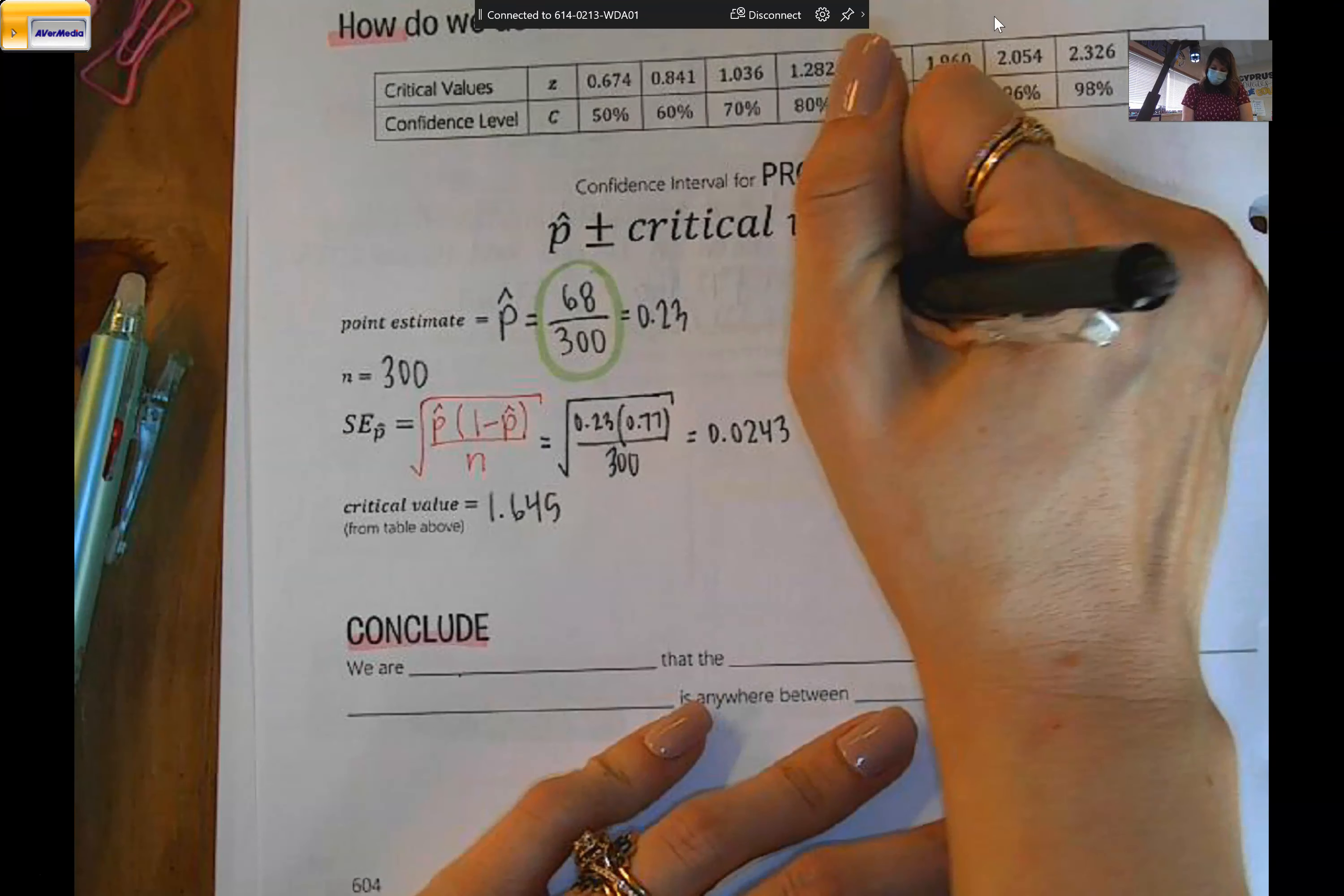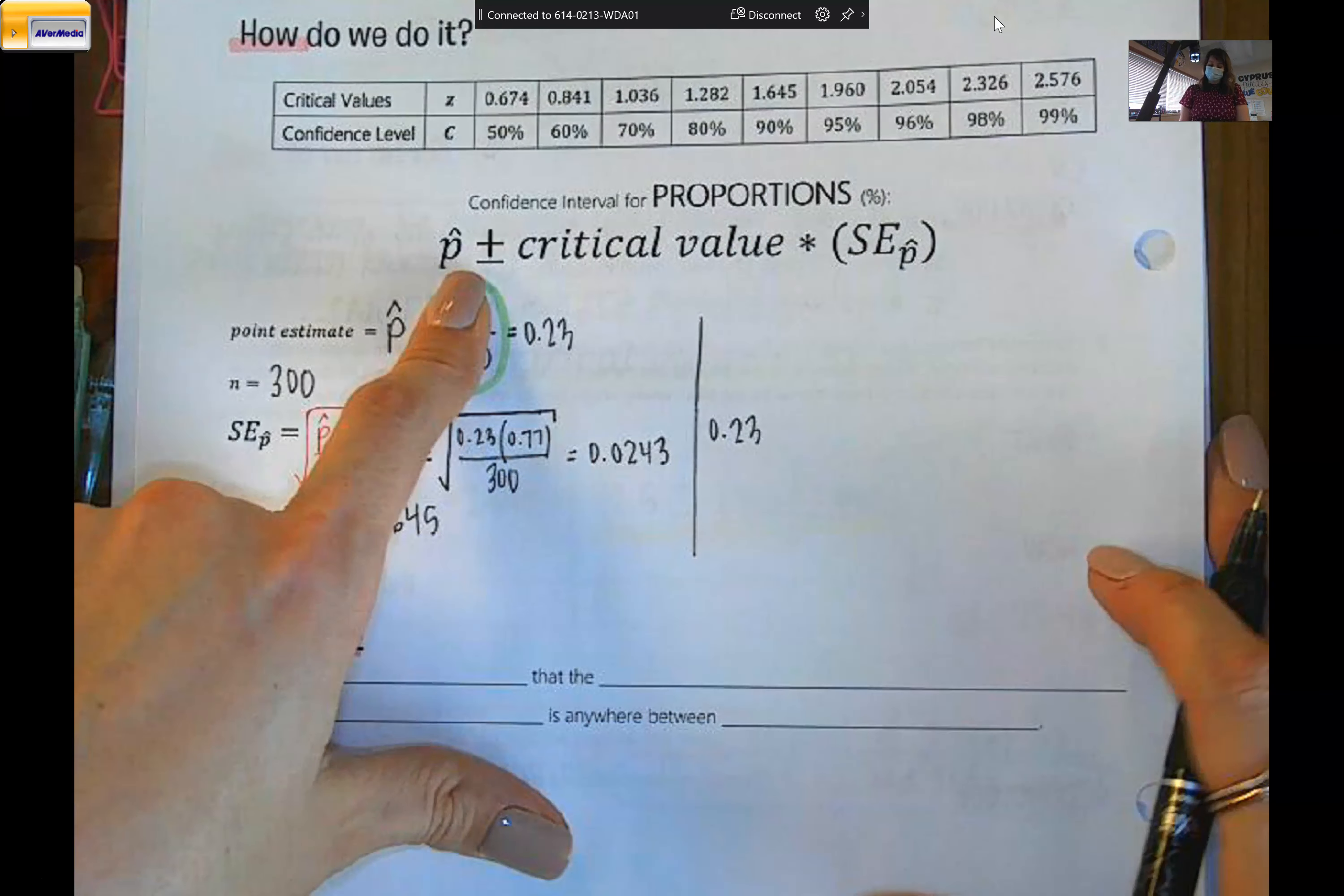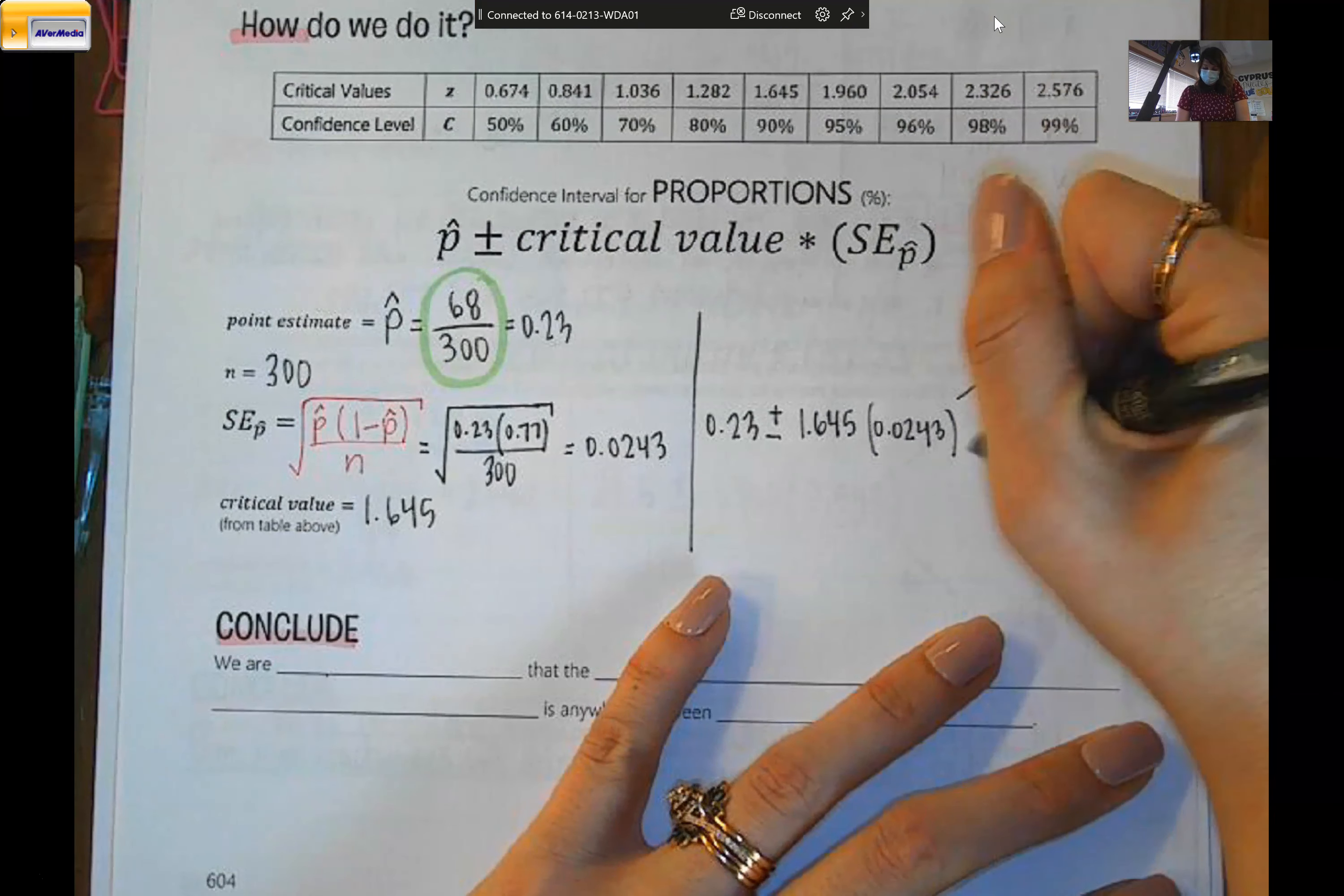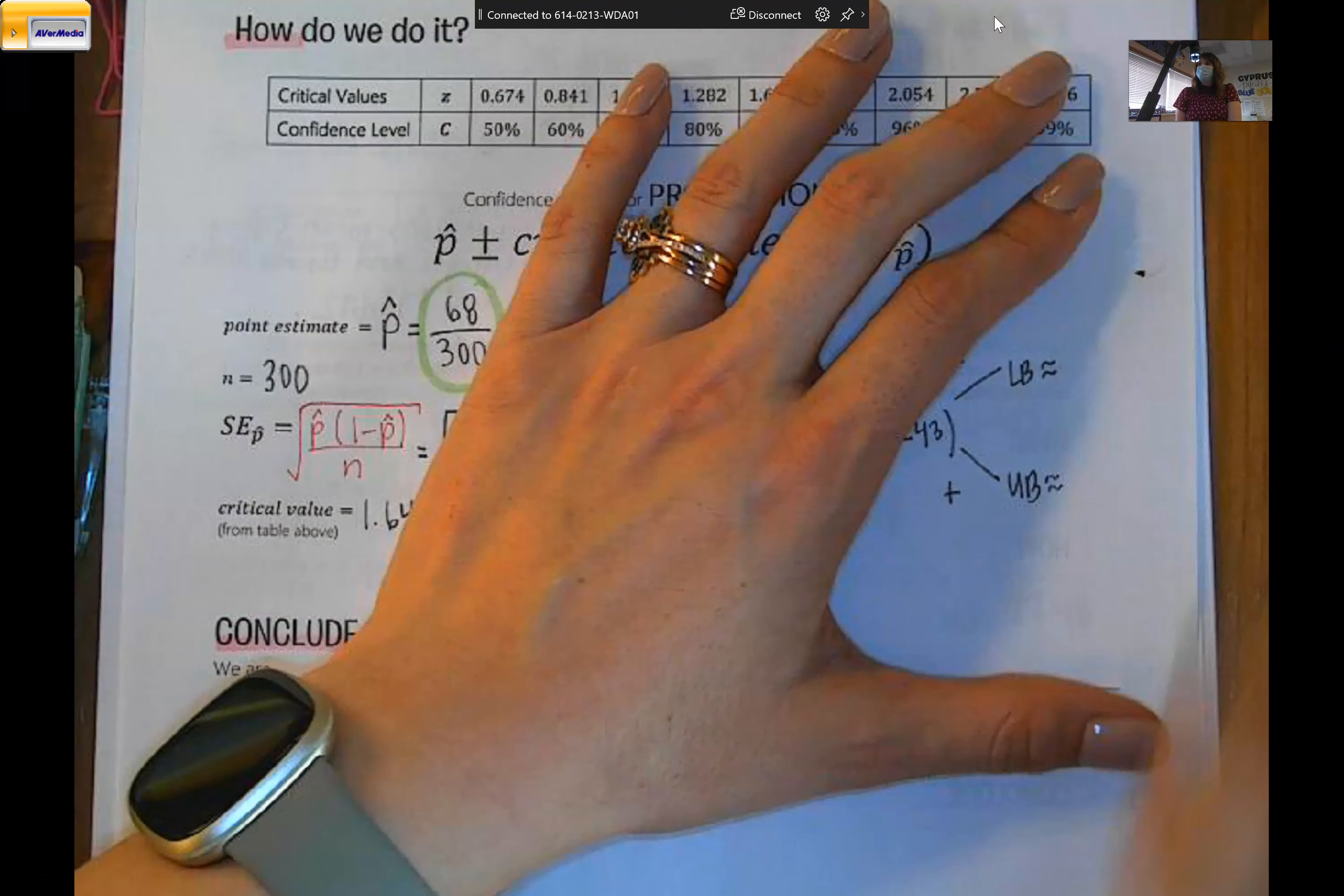And now I'm going to follow this formula to make my confidence interval. So my point estimate, 0.23, so 23% of my sample could roll their tongue, plus or minus our critical value, 1.645, times our standard error, 0.0243. And then it's exactly the same as all the other ones. I find my lower bound and my upper bound. I rounded to two decimal places on this one.